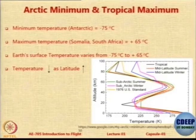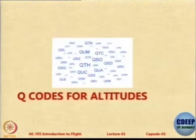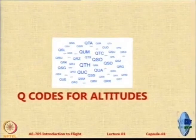As you notice, as latitude increases — as you go away from the equator — temperature falls. Now we come to the question about these various altitudes and how they are reconciled. We call them Q altitudes or Q codes — there are many of them. Let us see them one by one.